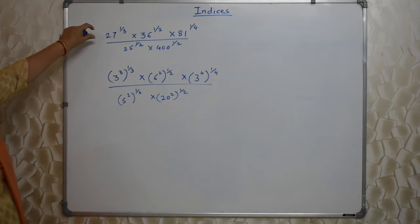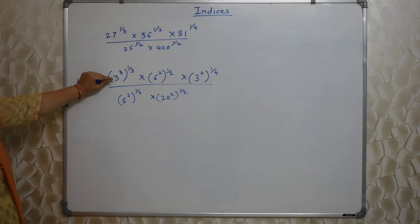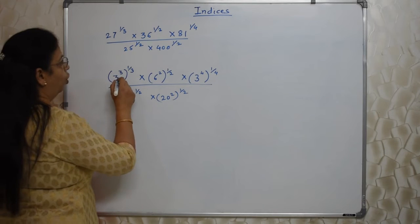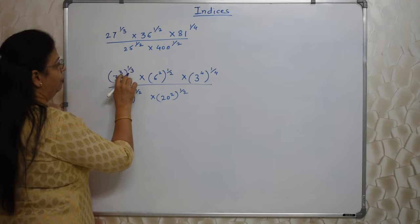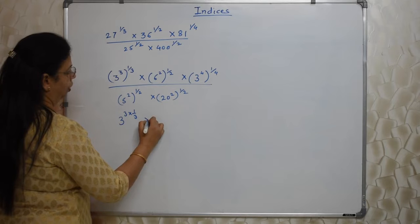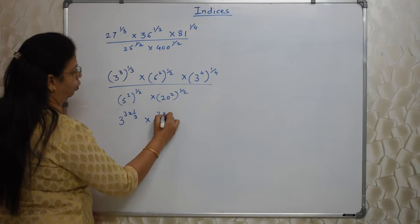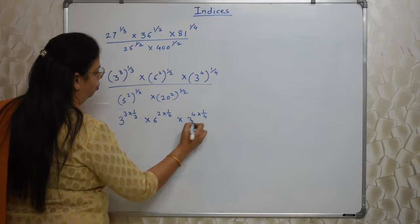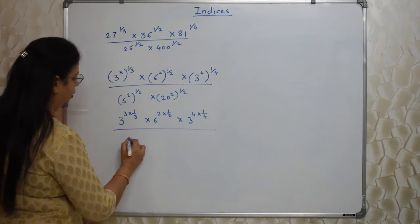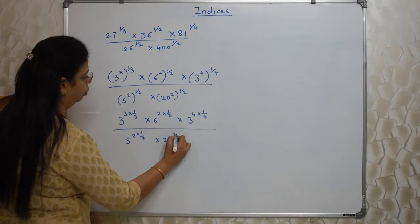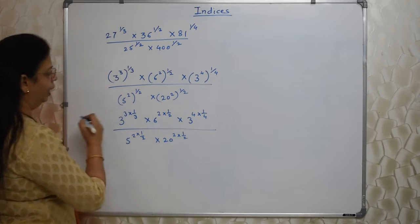5² is 25, 25 and 20² is 400. So I have just written these big numbers as base as a small number. Value I have not changed. Now as per the rule of indices, this will be multiplied. So 3 into 1/3, into 6, 2 into 1/2.